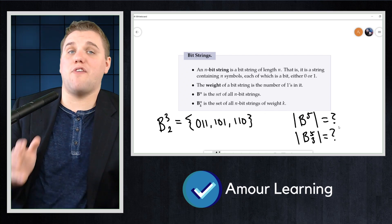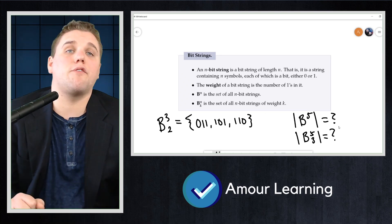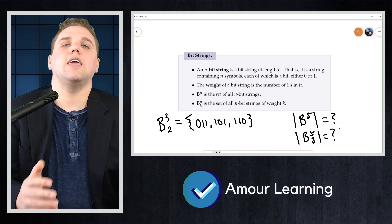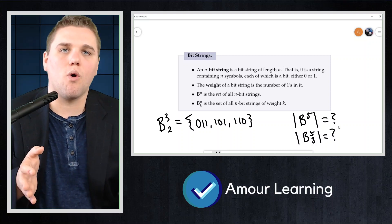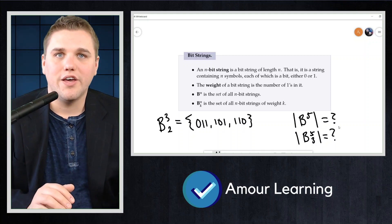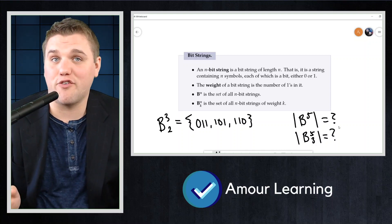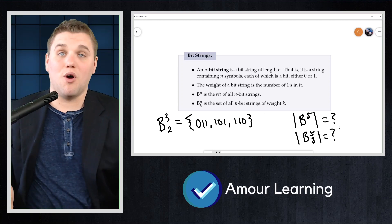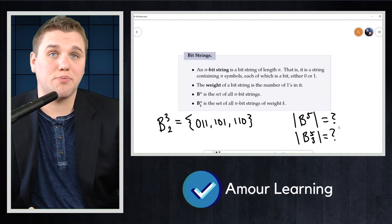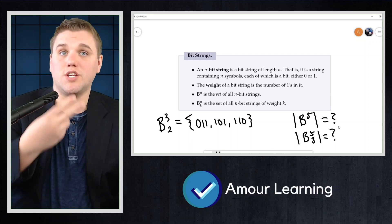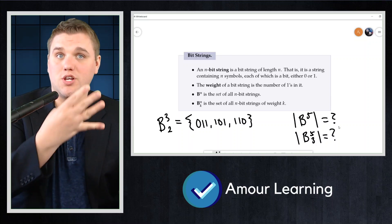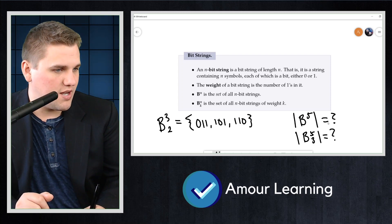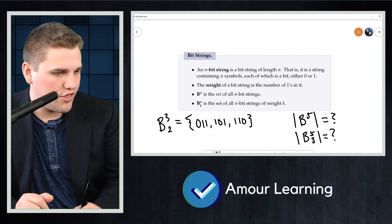To find the number of five-bit strings is pretty straightforward. We have five bits and each can either be a zero or a one, so there are two choices for the first bit, two choices for the second bit, and so on. By the multiplicative principle, there are 2×2×2×2×2 = 32 such strings. So |B(5)| = 32.